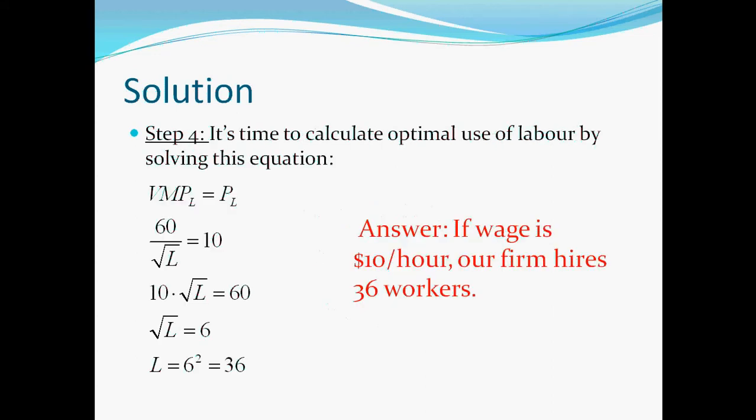And now we have to calculate the optimal use of labor by solving this equation in the first row. So you can see the solution here. And this means that in the first case when the wage is 10 dollars per hour our firm hires 36 workers.